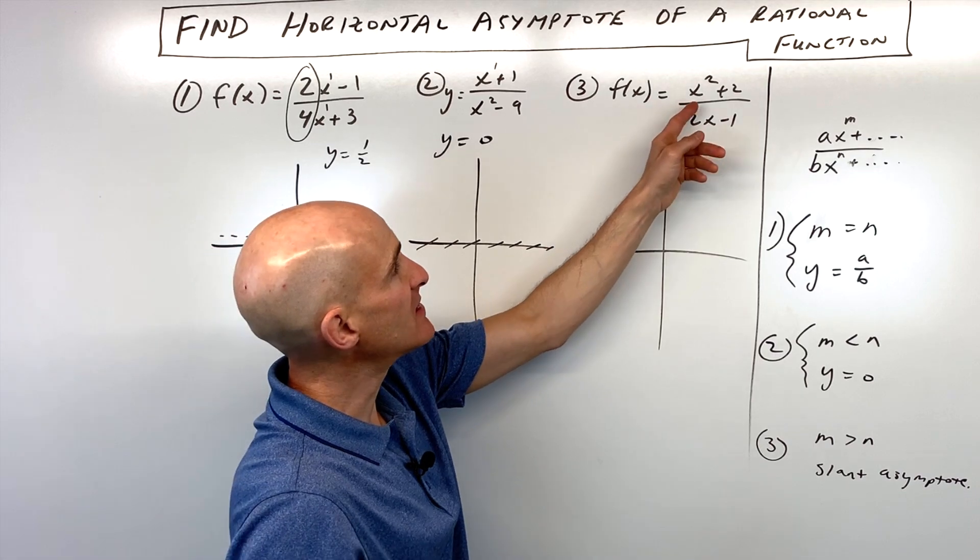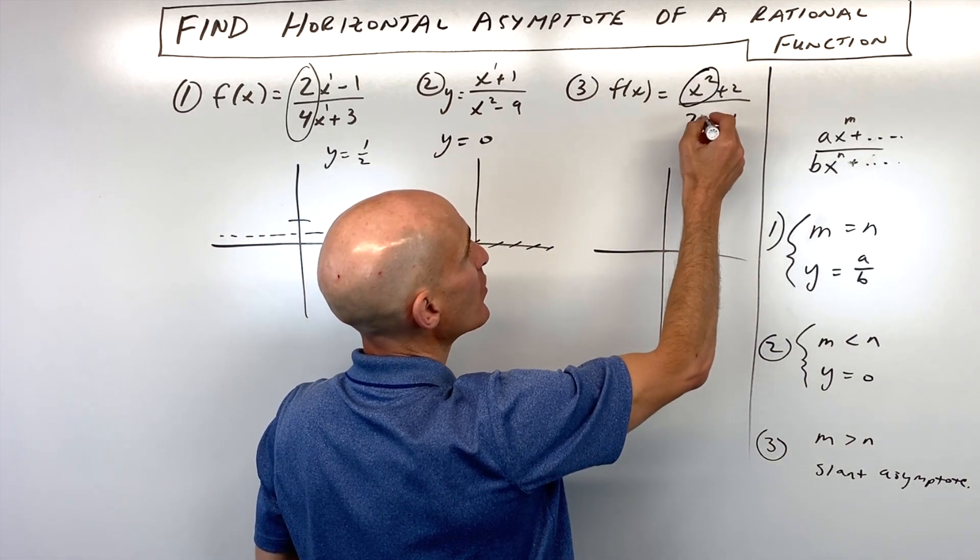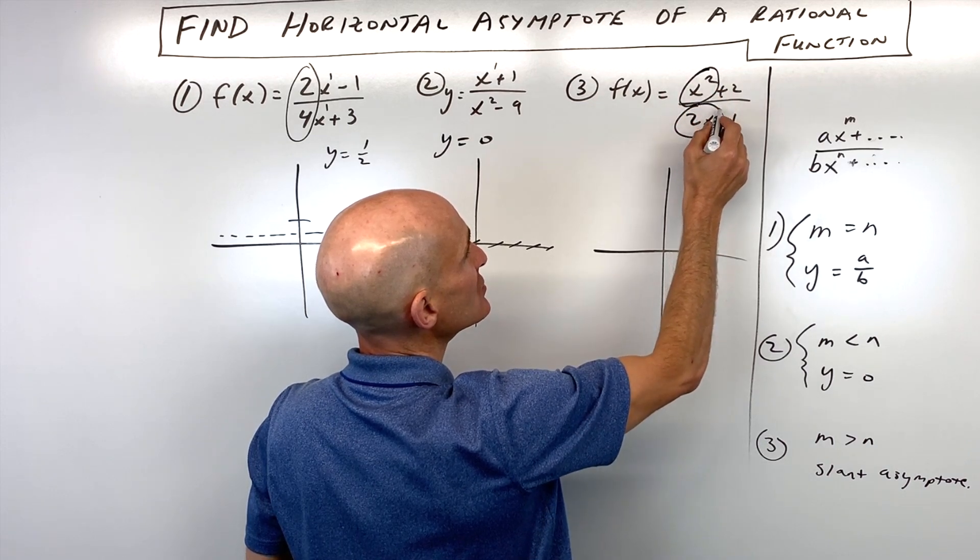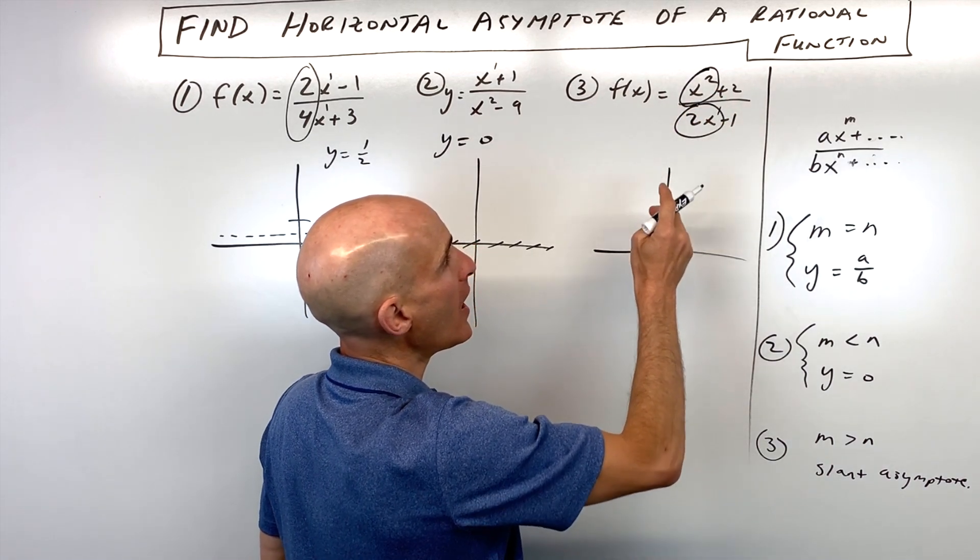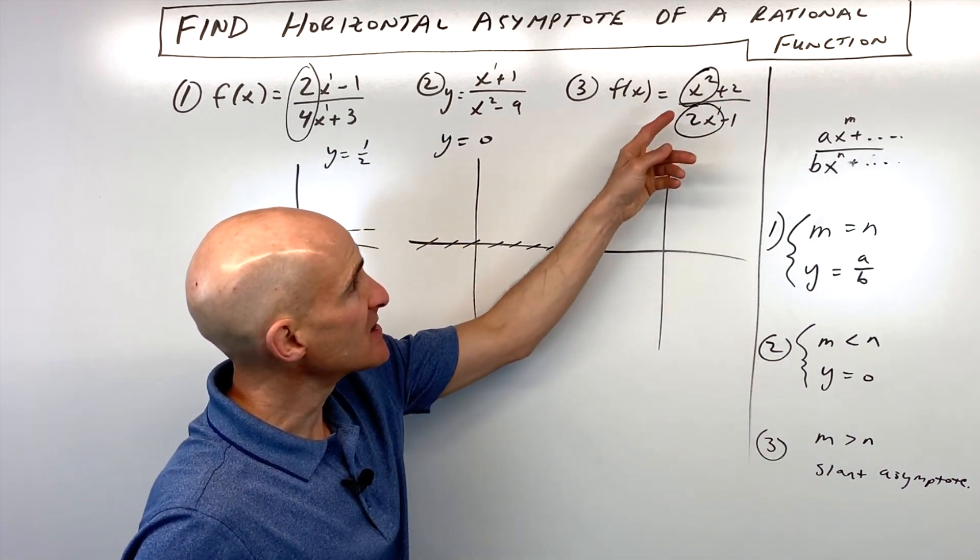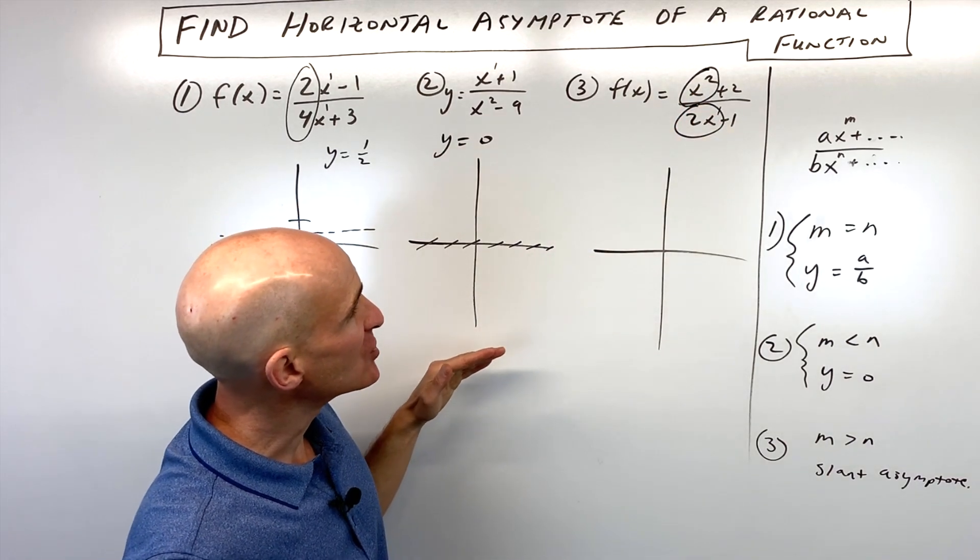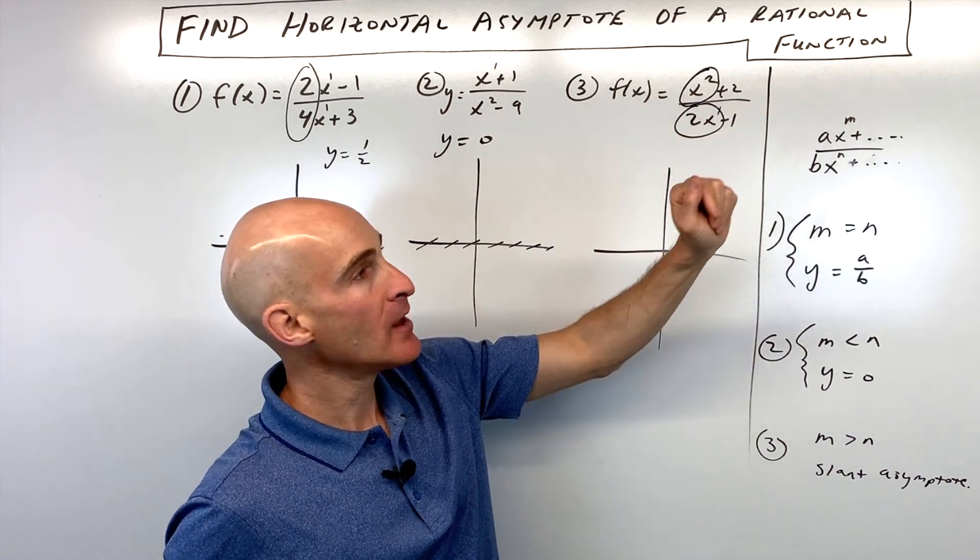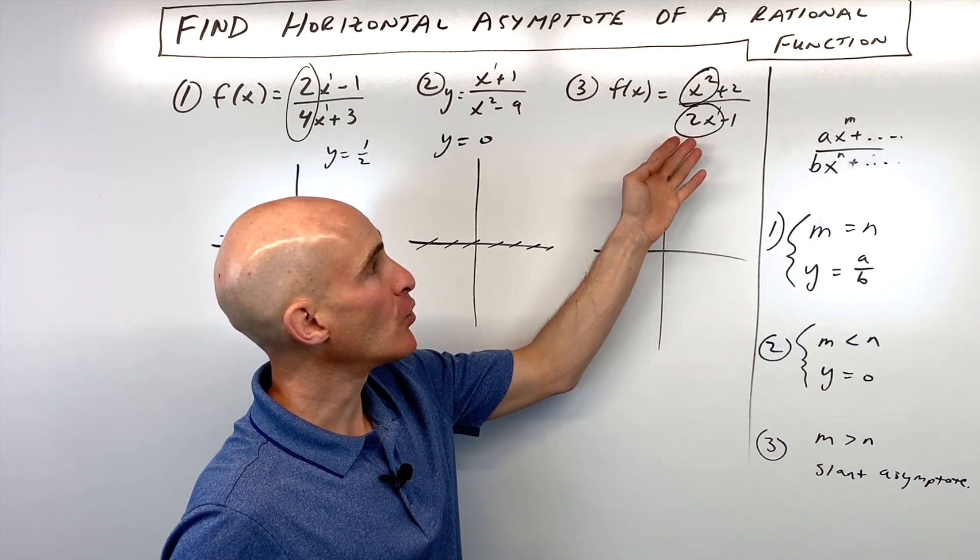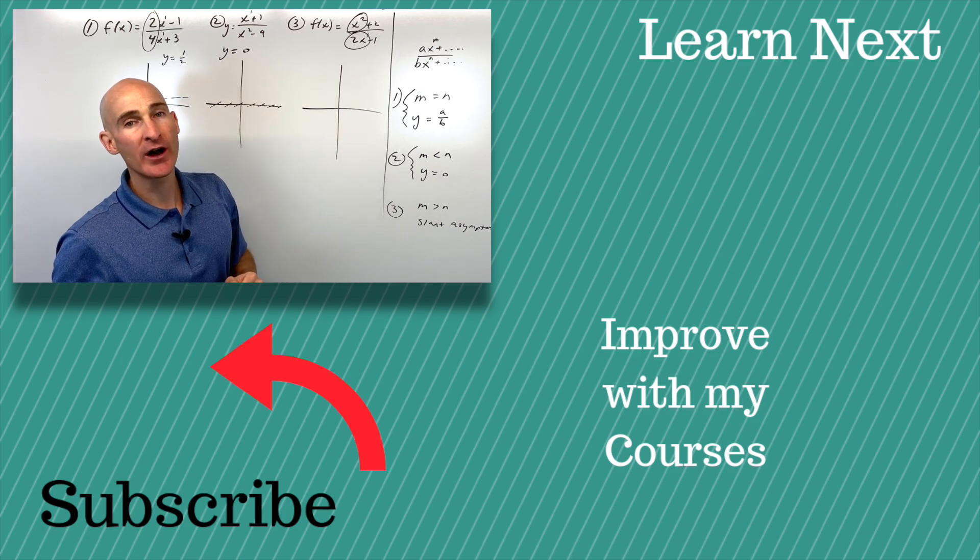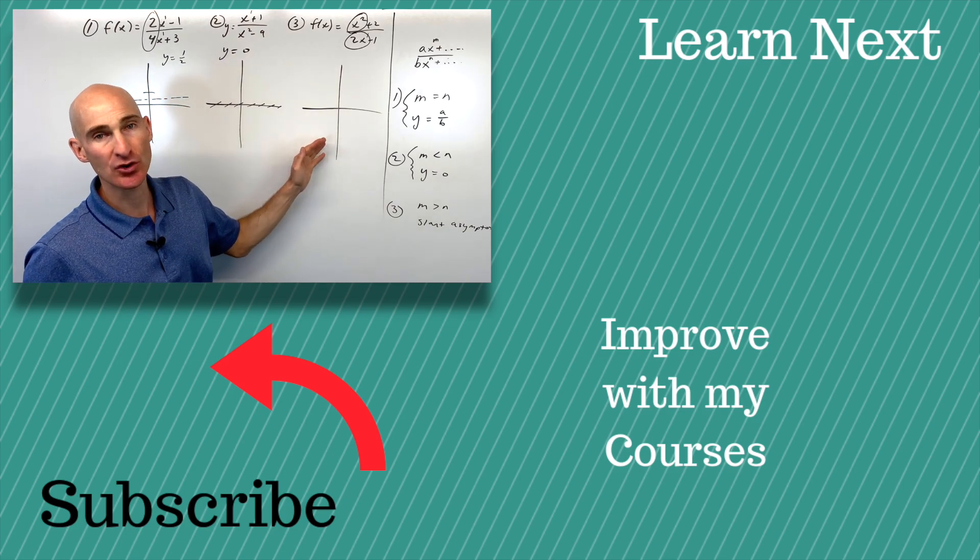And then the third one, you can see that the highest degree term here, x squared, compared to the highest degree term of the denominator, 2x, this is a two for an exponent. That's only a one. Here, you can see that because this is larger in the numerator by one degree, you're actually going to have a slant asymptote. And in order to find that slant asymptote, what you would do is you would do long division, polynomial long division, to find the equation of that slant asymptote.